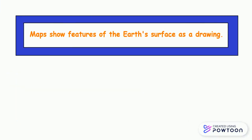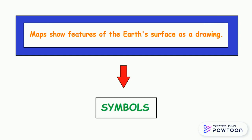Maps show all features as drawings and they are called symbols. Symbols in maps are used to show the important physical and human features.